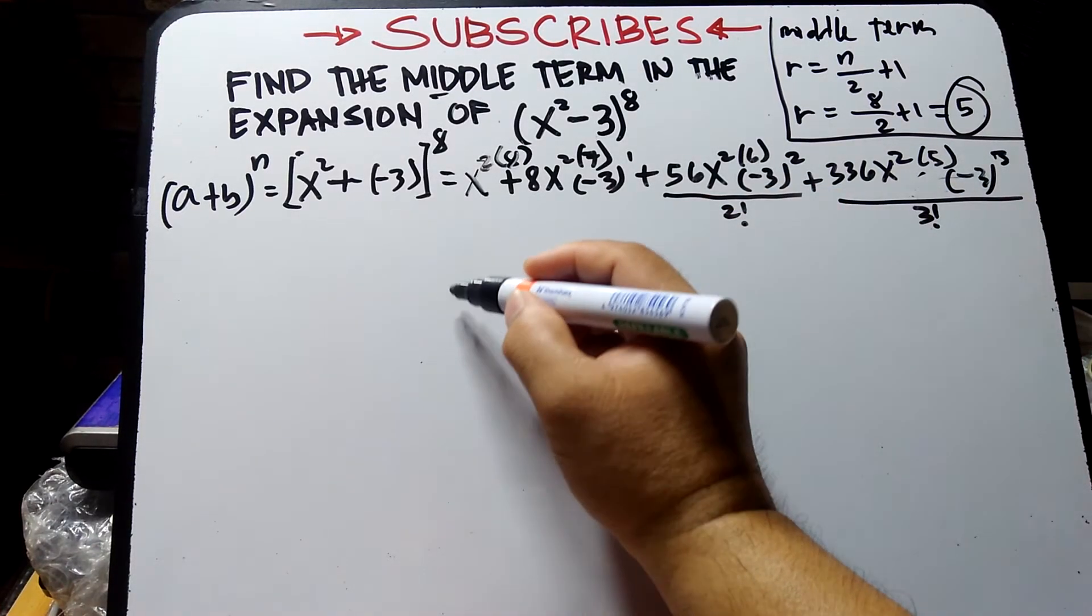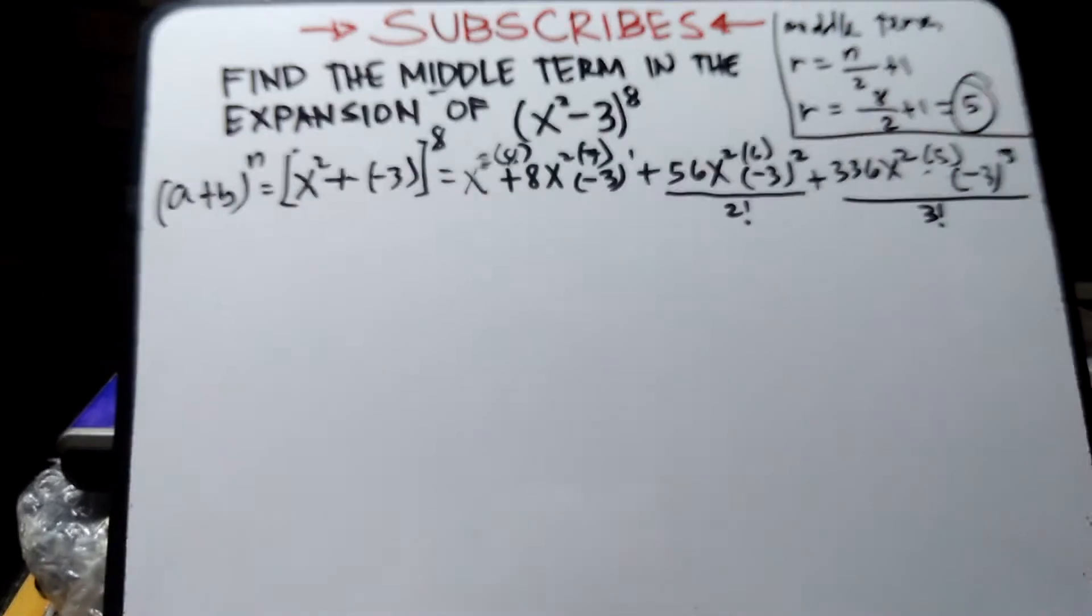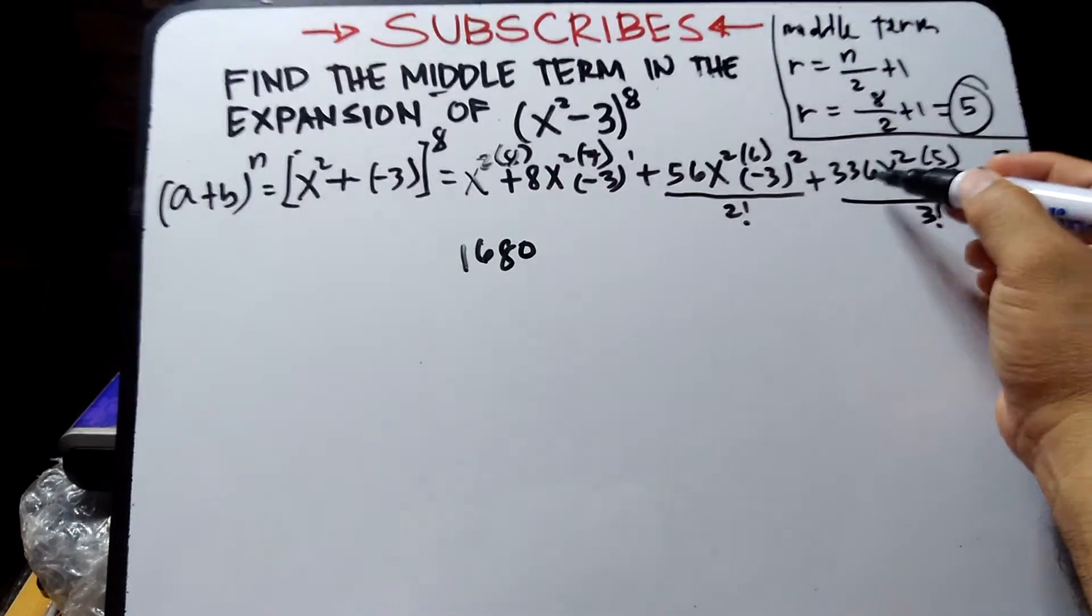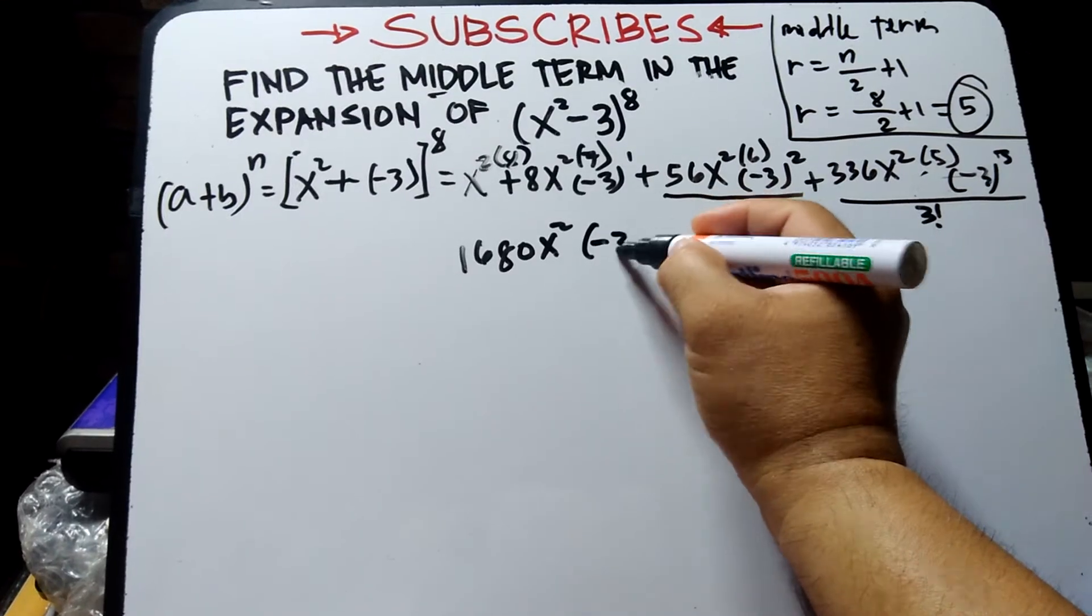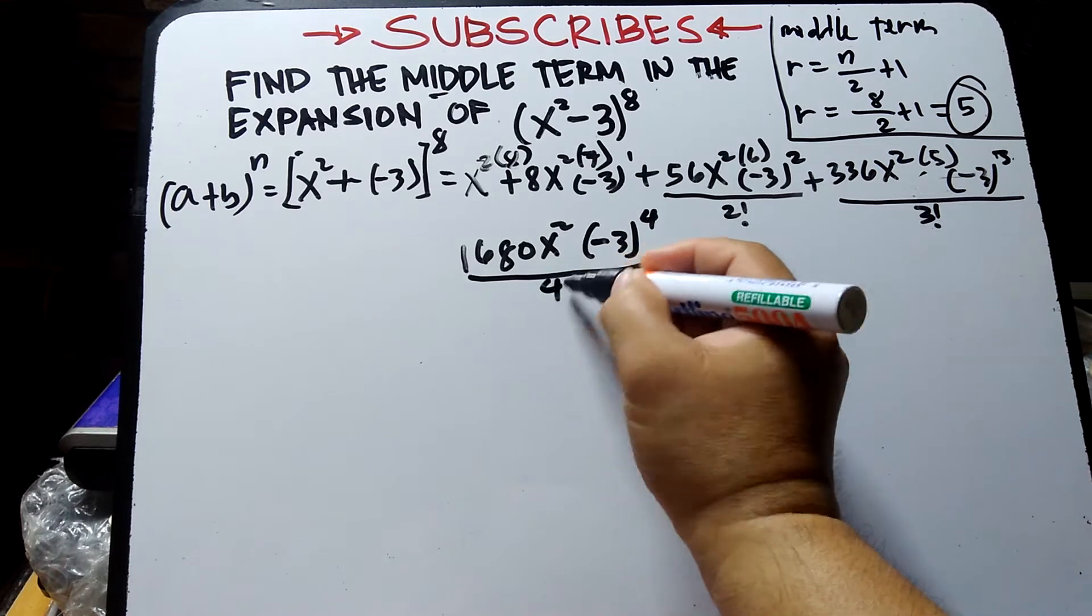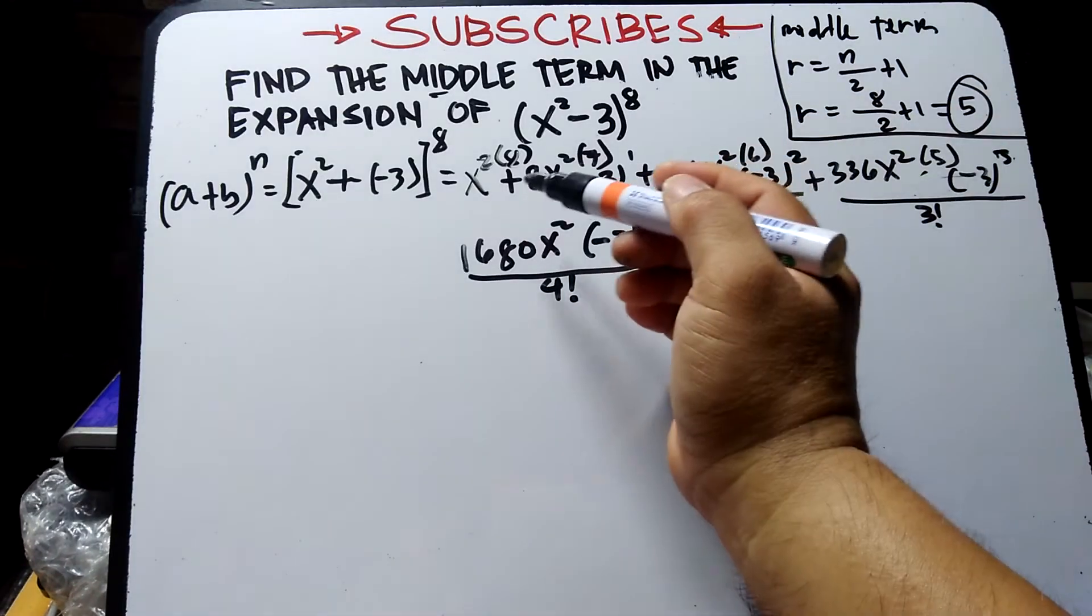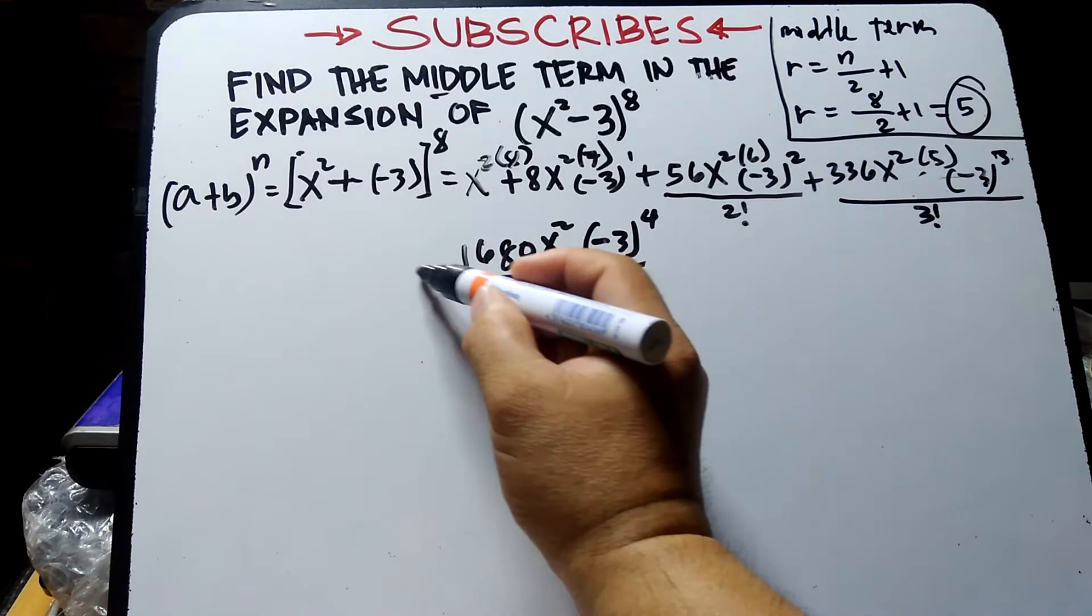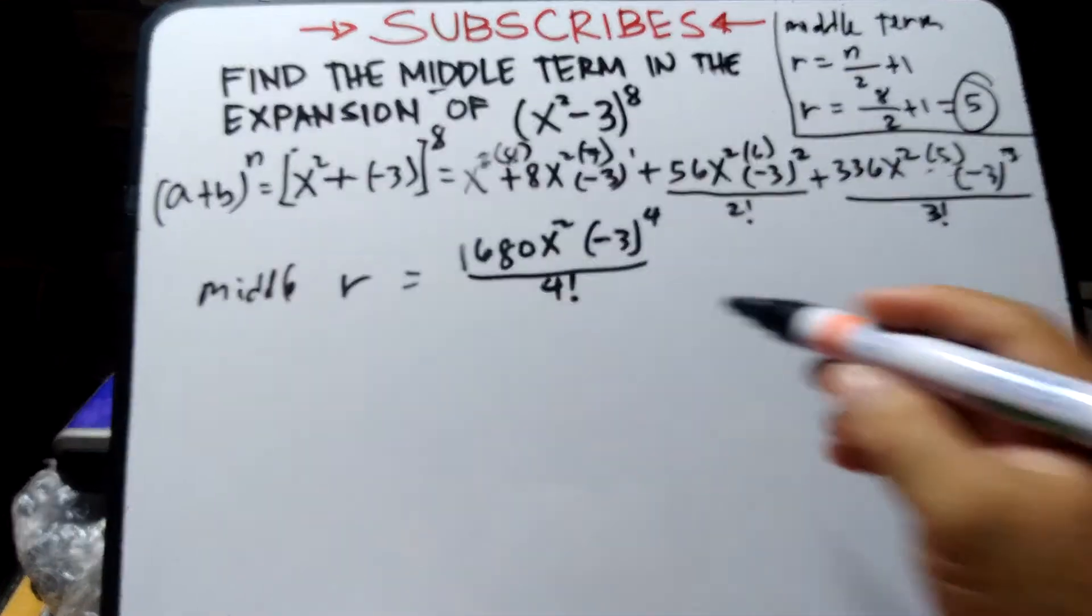5 times 336 equals 1680, times x², multiply by -3 raised to 4 over 4 factorial. The 5th term, r equals 5, we count: 1 term, 2 terms, 3 terms, 4 terms, and 5 terms. So this is the middle term.